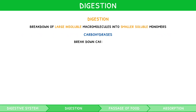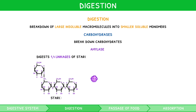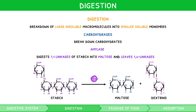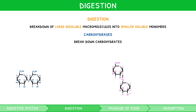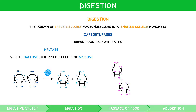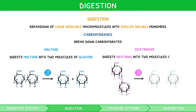Carbohydrases break down carbohydrates. You need to know three specific examples. Amylase, which digests 1,4 linkages of starch into molecules of maltose. During this process, it leaves molecules with 1,6 linkages, called dextrins. Maltase, which digests maltose into two molecules of glucose. And dextrinase, which digests dextrins into two molecules of glucose.